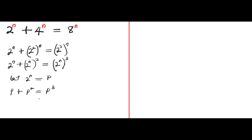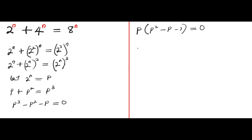So this equation can be rewritten as p to the power of 3 minus p squared minus p equals to 0. We can factorize p out from this cubic equation, giving us p times the quantity p squared minus p minus 1 equals to 0. So we can set p equal to 0, or we can set p squared minus p minus 1 equal to 0, which becomes a quadratic equation.